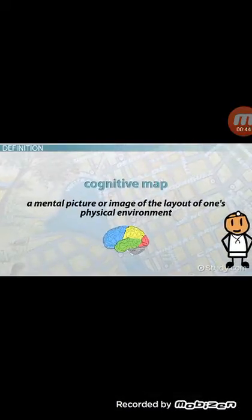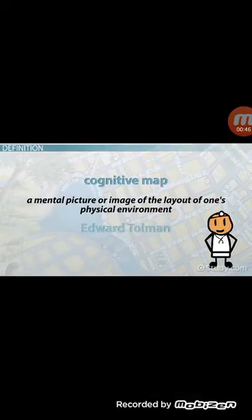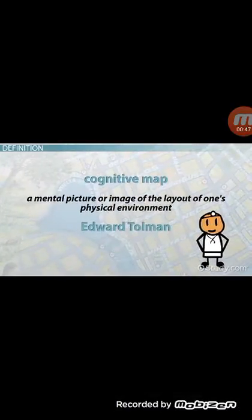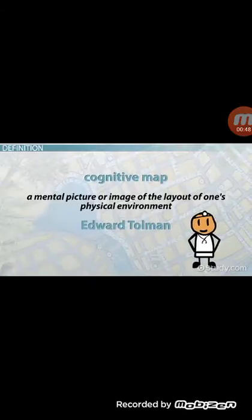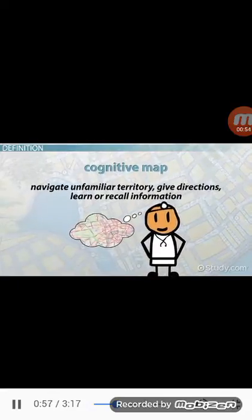The term was first coined by a psychologist named Edward Tolman in the 1940s. Cognitive maps can help us navigate unfamiliar territory, give directions, and learn or recall information.